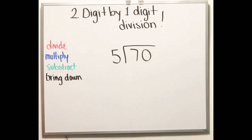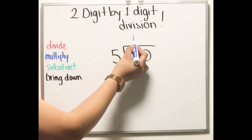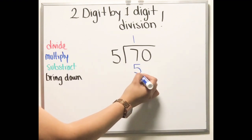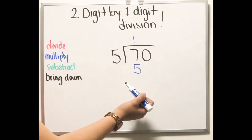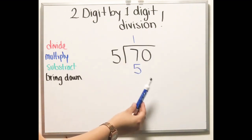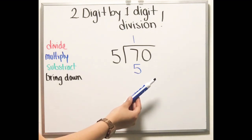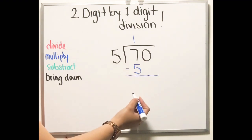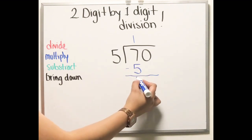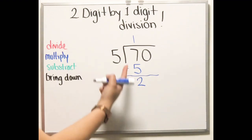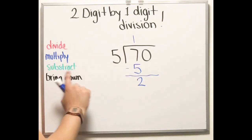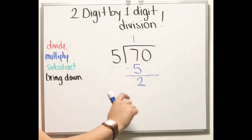Five times one is 5, and that works. Five times two would be ten, which is already more than 7, so we use 5 times 1. Put the product, which is 5, right here. It seems weird that we're doing division and talking about multiplication, but it makes sense. Now subtract: 7 minus 5 gives me 2.